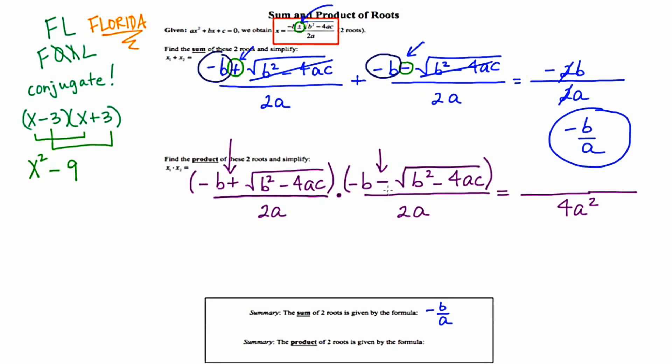That means I'm going to do a Florida, starting with the first. Negative b times negative b is positive b squared. Now, I'm going to do positive chunk times negative chunk.